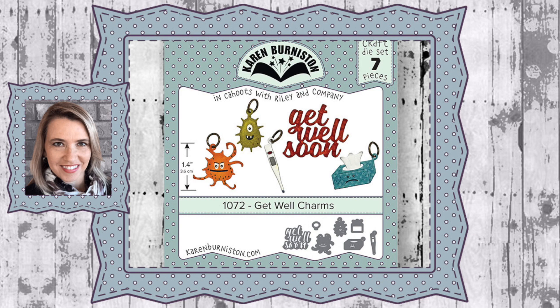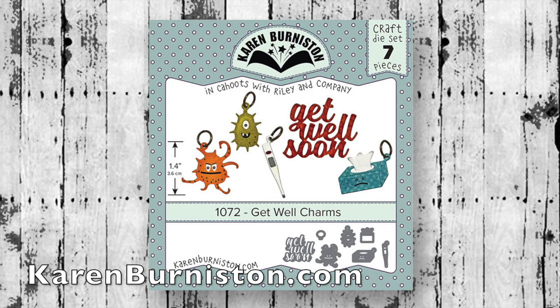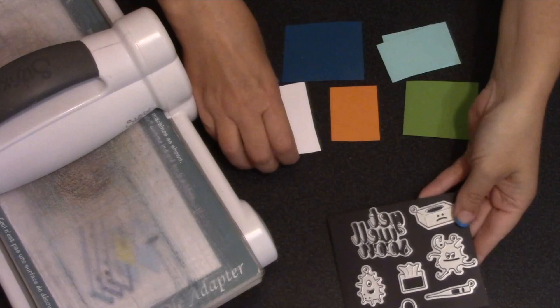Hello, it's Karen Burniston here with an assembly video for one of our die sets, this is die number 1072, the get well charms. You can check out all of our designs at karenburniston.com. There are seven individual dies in the set.